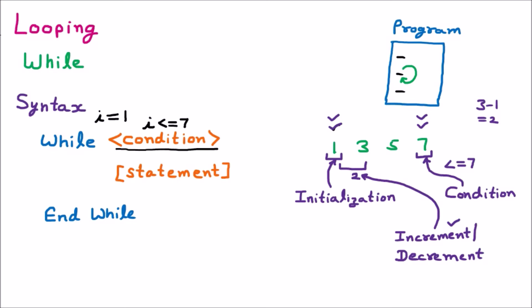Before ending the while, we apply: i equals i plus two. If the difference were three, you'd write i equals i plus three. For decrement, you'd write i equals i minus two. We have now handled all three parts: initialization, condition, and increment or decrement. Inside the loop body, we add a print statement to print the value of i.